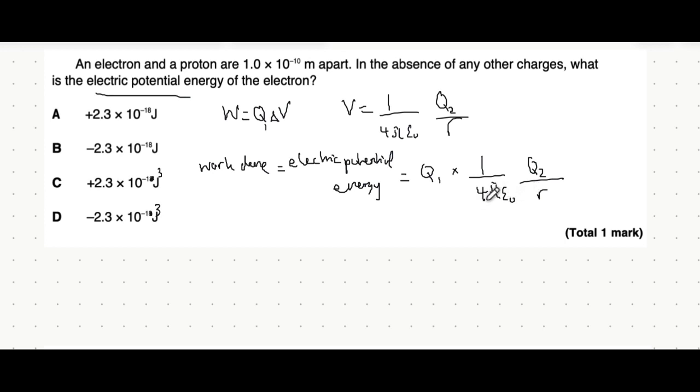By the way just to recap, 4 pi of course is the value in your calculator that constant. This is the permittivity of free space which is 8.85 times 10 to the minus 12. Q1 is one of the charges. So we're talking about an electron and a proton here. The charge of an electron is minus 1.6 times 10 to the power of minus 19. You do have to be careful of the minus and do notice that these answers are given in positive and negative. So do take into account of that.